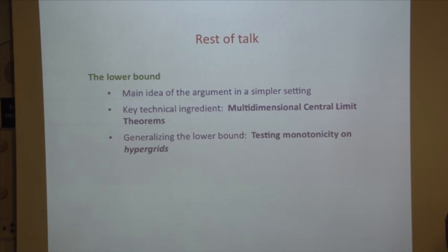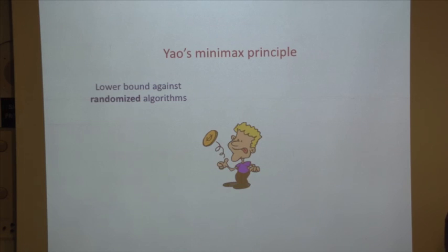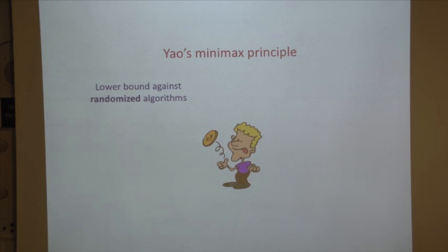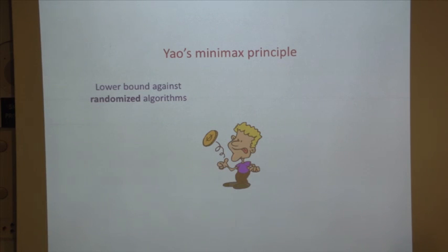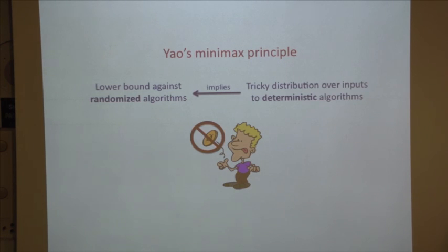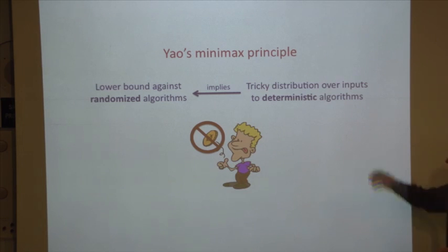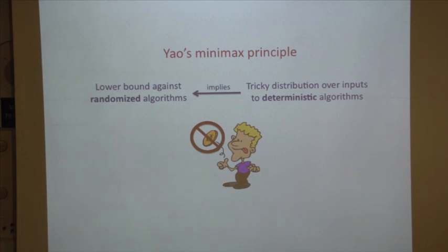For the lower bound, I wish I could say I have a breakthrough new technique, but that's not true. The lower bound is obtained using the well-worn tool of Yao's min-max principle. The high-level idea is you'd like to prove a lower bound against randomized property testing algorithms. Yao's min-max principle tells us it's enough to cook up a clever distribution over inputs — a distribution over functions — capable of tricking deterministic algorithms.